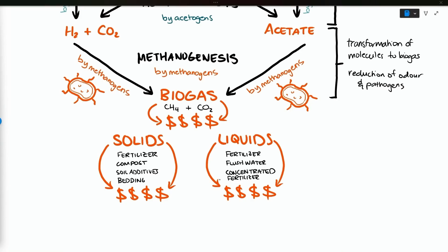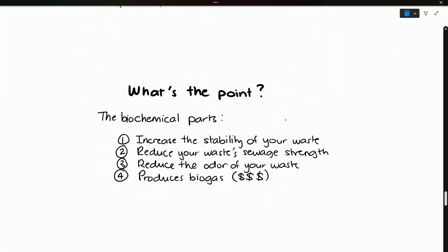So out of your digester tank, you'll get your biogas and some solid and liquid products that you can potentially make money from. So what do I get out of the biochemical part of AD? You increase the stability of your waste, you reduce your waste sewage strength, reduce the odor of your waste, and you can produce biogas which can hopefully make you some money.